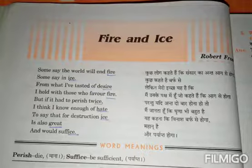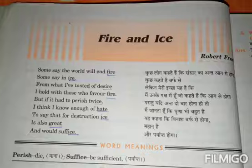Good morning, Standard 10. Today we are going to read our next poem. The poem title is 'Fire and Ice' written by Robert Frost. Students, this is the second poem in our First Flight book. The poet's name is Robert Frost. It is a very interesting poem. Let's read this poem: 'Some say the world will end in fire, some say in ice. From what I have tasted of desire, I hold with those who favor fire. But if it had to perish twice, I think I know enough of hate to say that for destruction ice is also great and would suffice.'